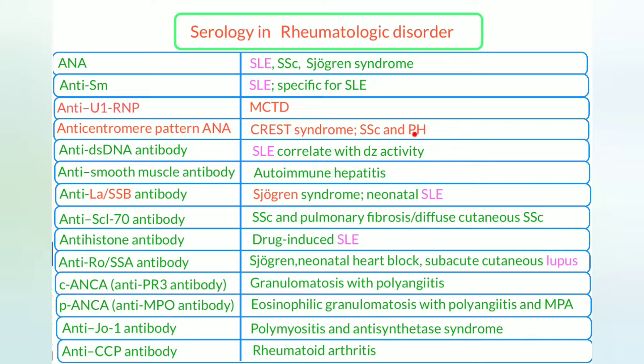Anti-double stranded DNA antibody (anti-dsDNA) is for SLE and correlates with disease activity. Anti-smooth muscle antibody is for autoimmune hepatitis.